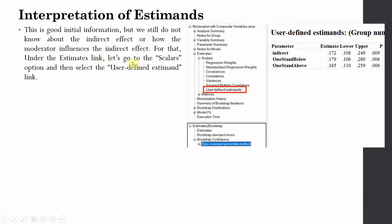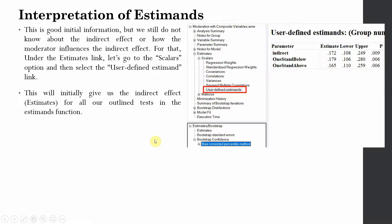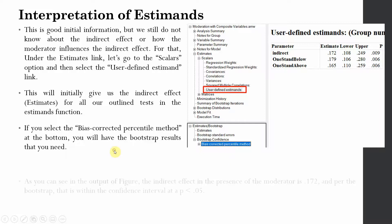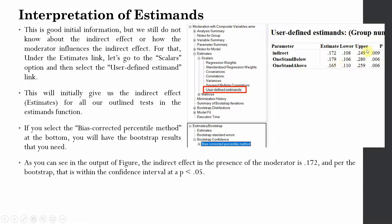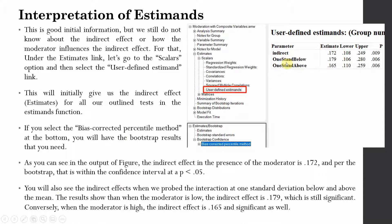For that, under the estimates link, go to scalars and then user-defined estimates, and select the bias-corrected percentile method. This will give us the indirect effect — your significant indirect effect. As you can see, 0.172 is your indirect effect, which is significant — this is the influence of organizational commitment on organizational performance through the mediator, collaborative culture. You will also see the indirect effects at one standard deviation below and above. When role ambiguity is low, the indirect effect is significant. When role ambiguity is high, the indirect effect is still significant. In both cases, whether role ambiguity is low or high, your indirect effect remains significant.